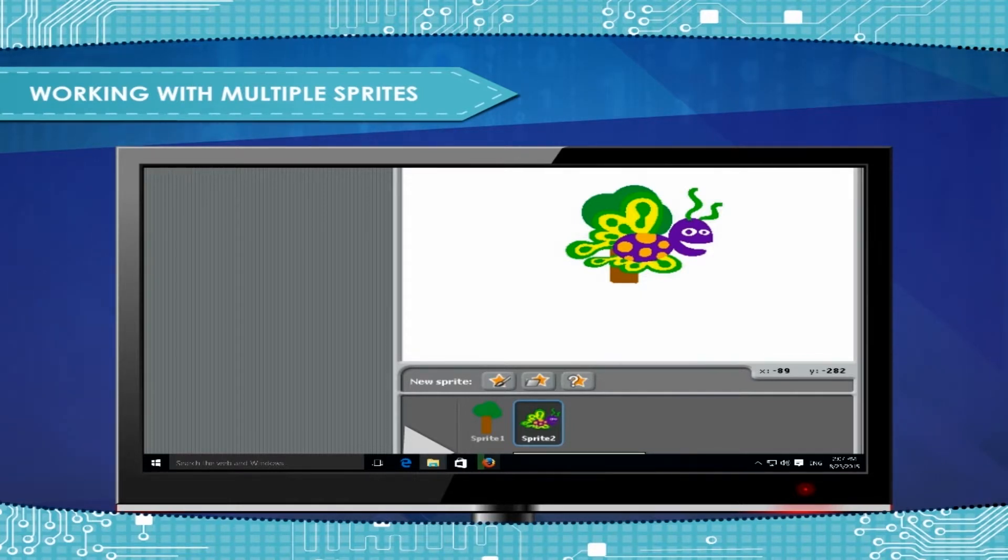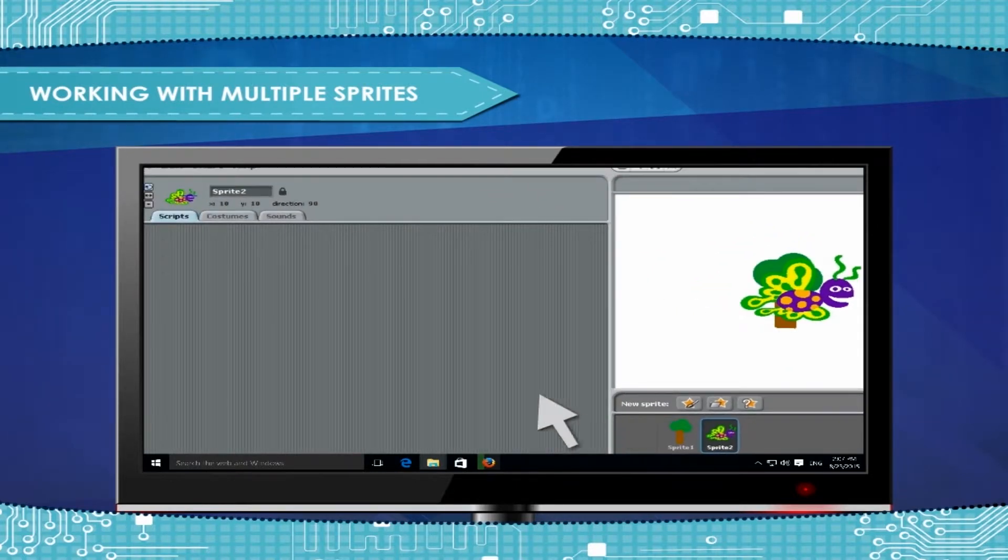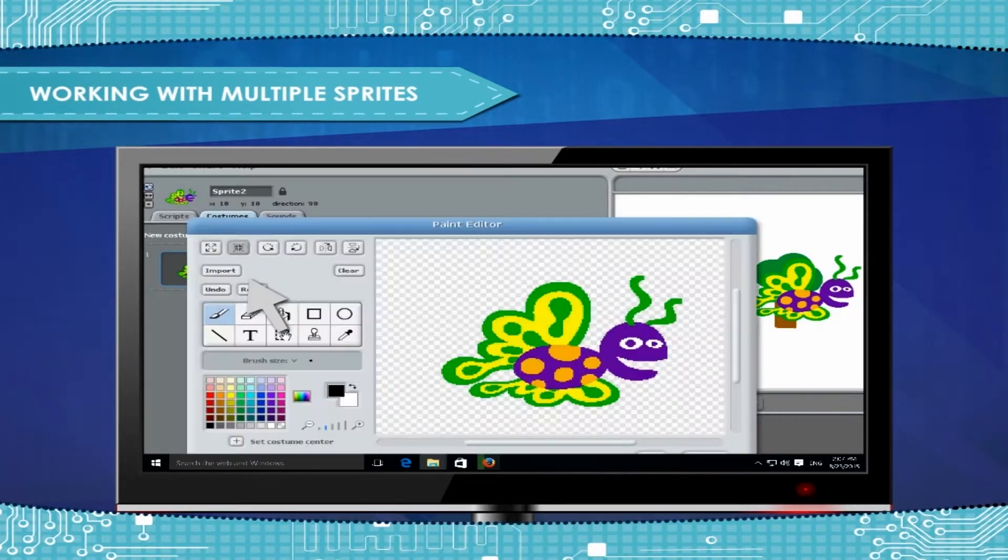So to change its size, select sprite 2 and then click on Costume button. Then click on Edit button. The sprite 2 will appear in the Edit box.